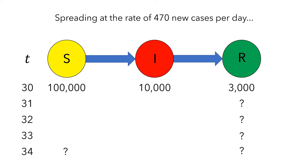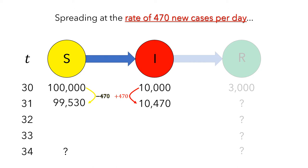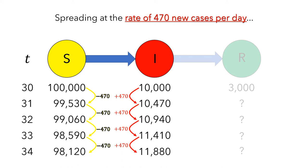This scenario doesn't say anything about how many people move from the infected to the removed groups, so we're not going to take those numbers into account right now. This rate of 470 new cases per day means that after one day, 470 people will move from the susceptible group to the infected group. So the number of infected people on day 31 will be 470 more than on day 30, and the size of the susceptible group has to decrease by 470 people to get 99,530 susceptible people. Repeating this process, we'd eventually find 98,120 susceptible people and 11,880 infected people on day 34.